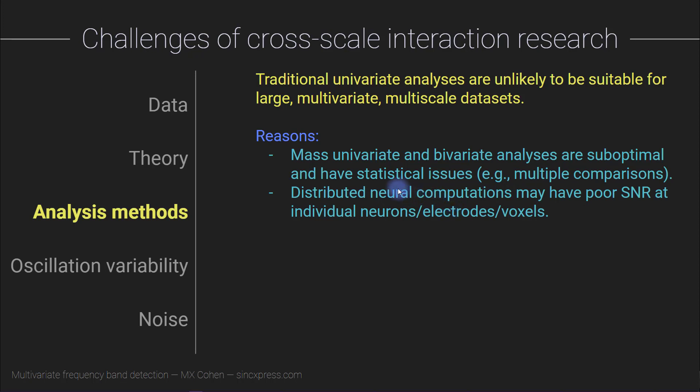Secondly, to the extent that neural computations are distributed across different neurons, across different circuits in the brain, then recording data and focusing the analyses on individual neurons or individual electrodes or individual voxels or pixels may lead to poor SNR and poor estimations of the actual underlying neural computations, assuming those computations are spatially distributed, which is something we increasingly believe in neuroscience.